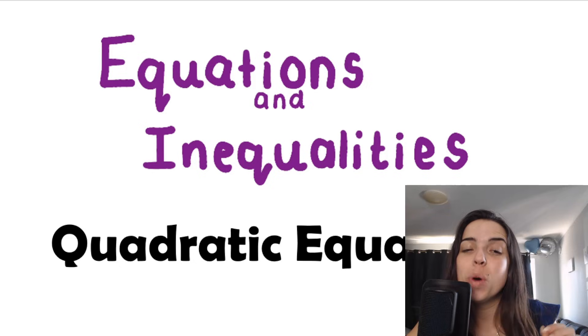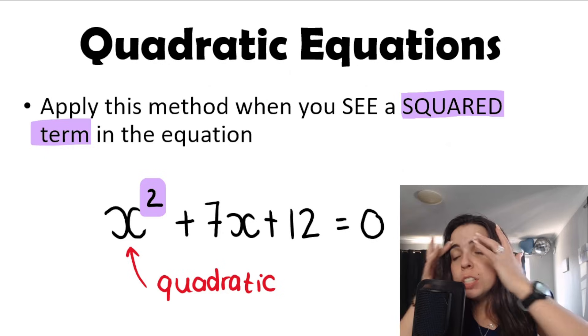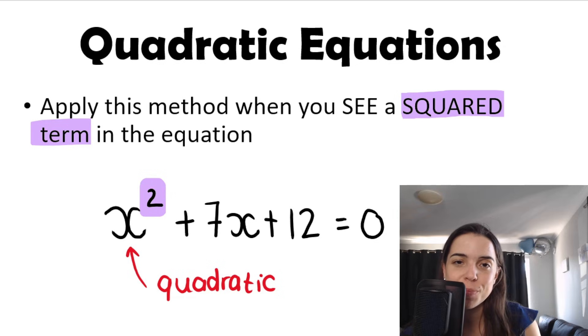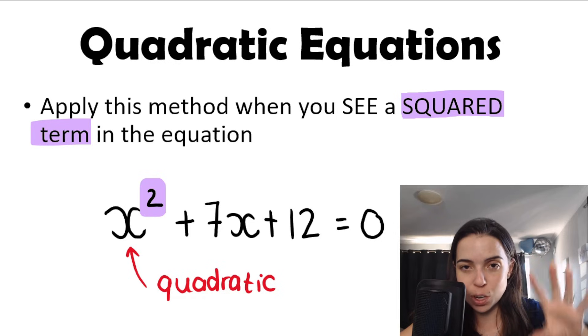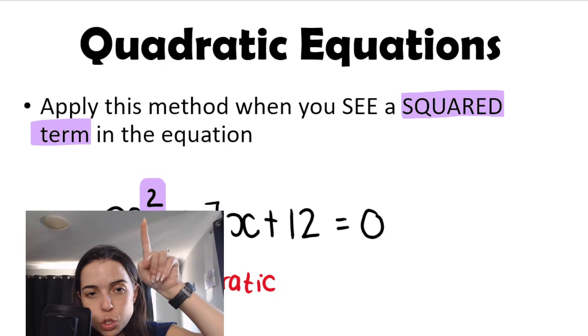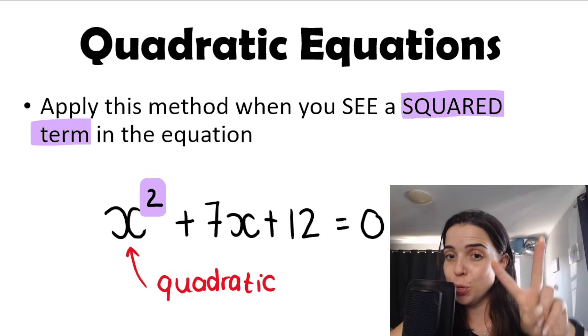Hello, math learners. In this video, we'll be going over quadratic equations. Some students struggle to see when an equation is a quadratic equation. We have a particular method that we need to use when our equation is a quadratic equation. And we're going to apply this quadratic equations method when you see a squared term in the equation. So our variable squared means that we're going to get two solutions. Quadratic, squared term, two solutions. So as soon as you see x squared, you know quadratic equations, this is the method.